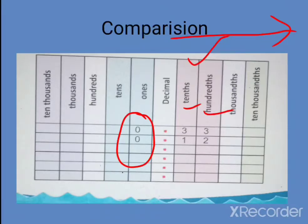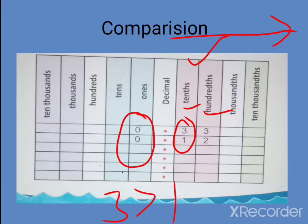So let's compare them to the whole number. Now if we compare them place by place — we compare the digit at the tenths place. 3 is bigger than 1, it means the first number 0.33 is bigger than the second number 0.12. Clear?